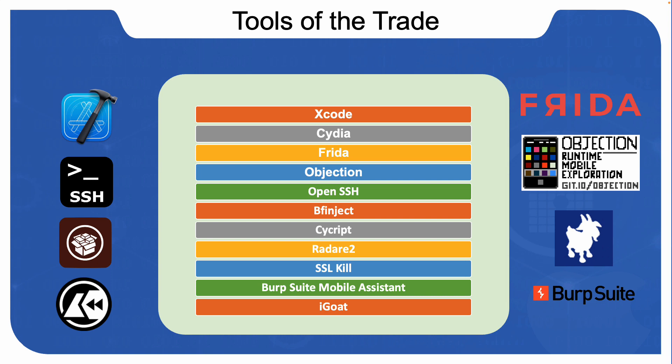bf_inject is a wrapper that takes care of correctly code-signing your dynamic libraries (dylibs) before injecting them — it's a somewhat complicated process we'll discover during this course. Cycript allows developers to explore and modify running applications on iOS. It uses a hybrid of C++ and Objective-C with JavaScript syntax through an interactive console that features syntax highlighting and tab completion.